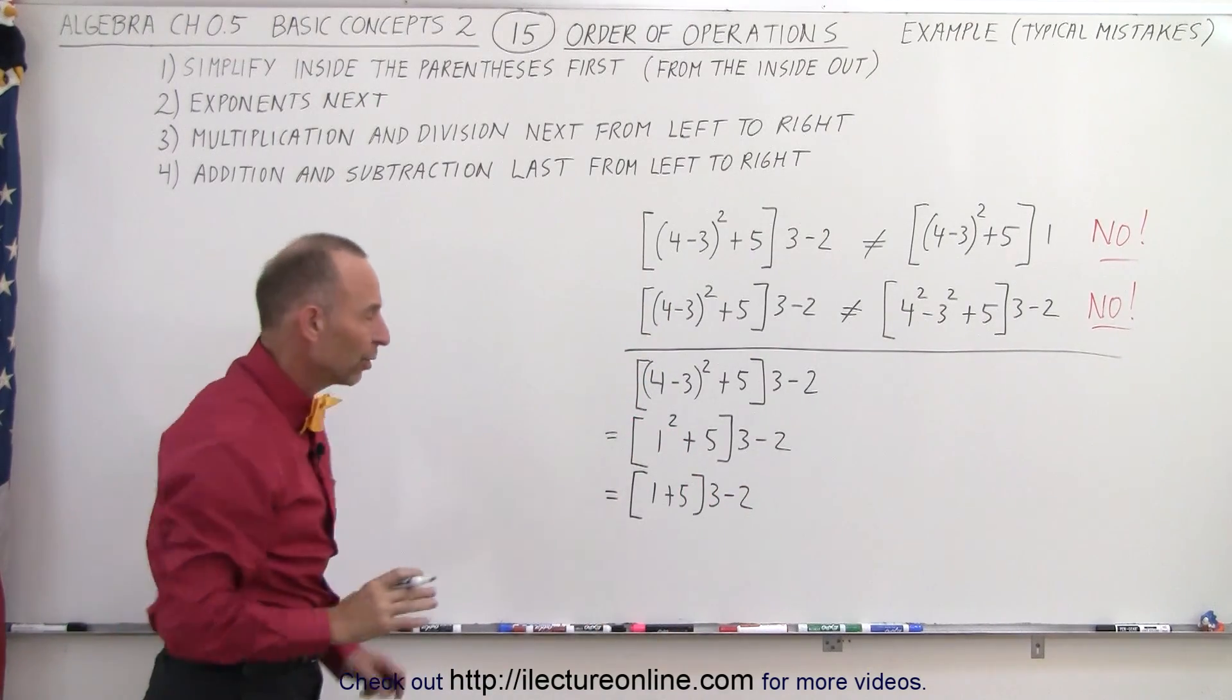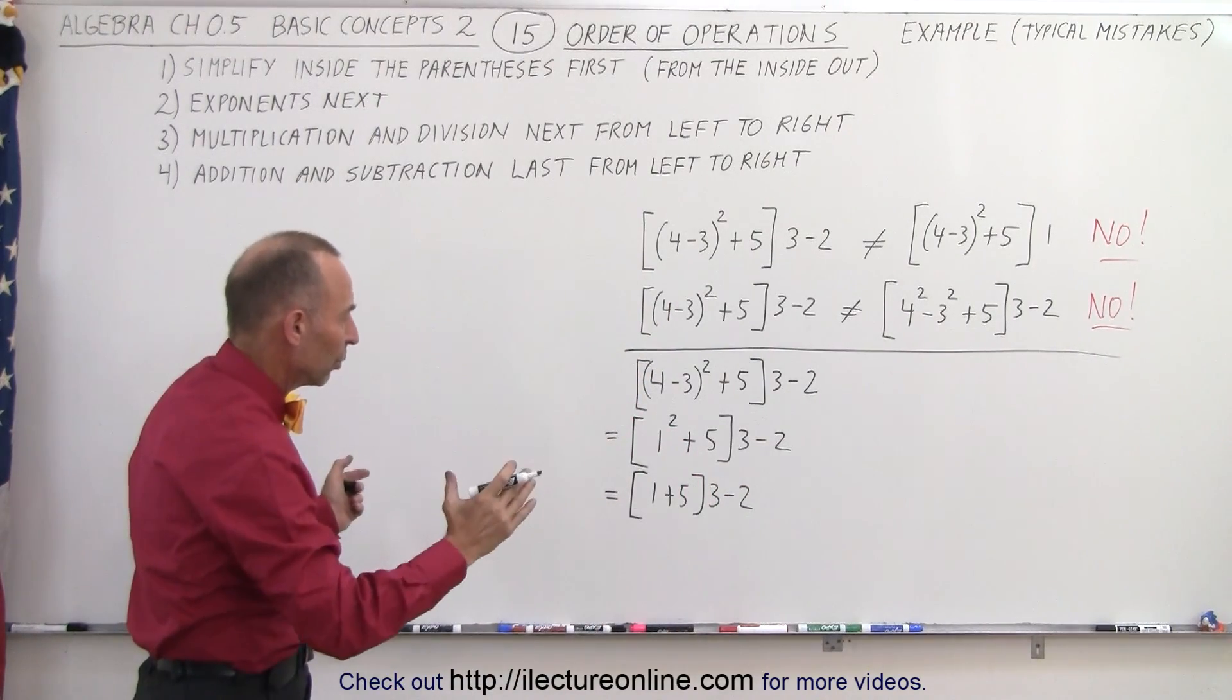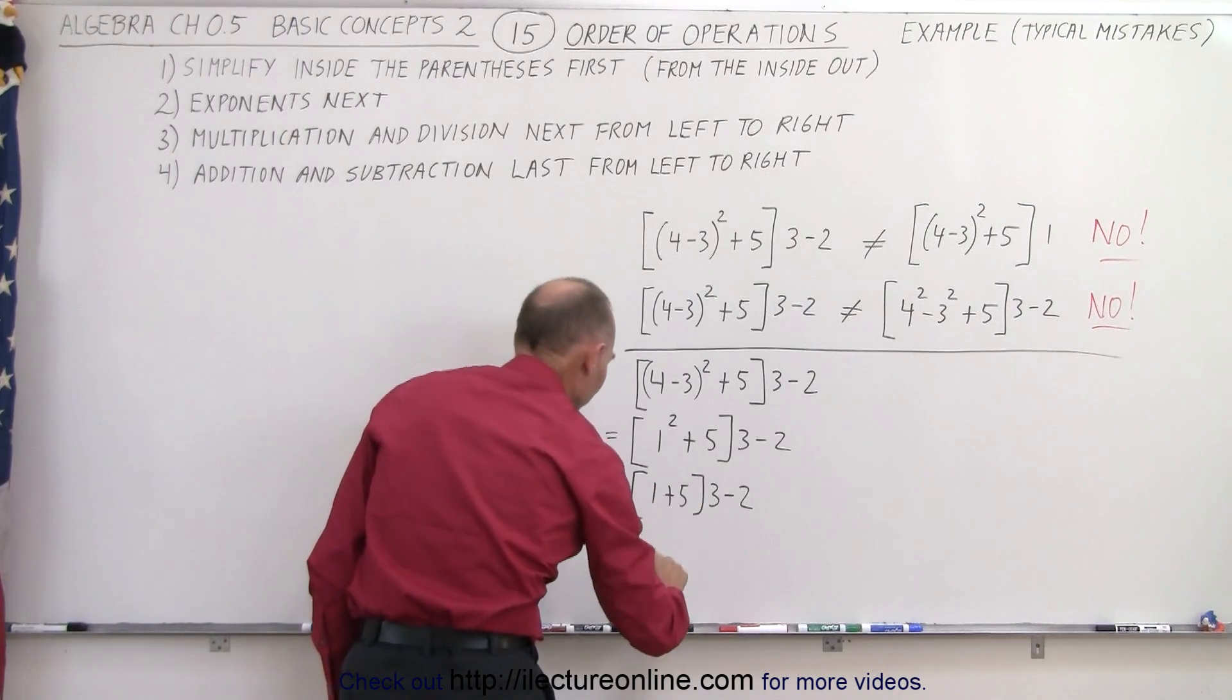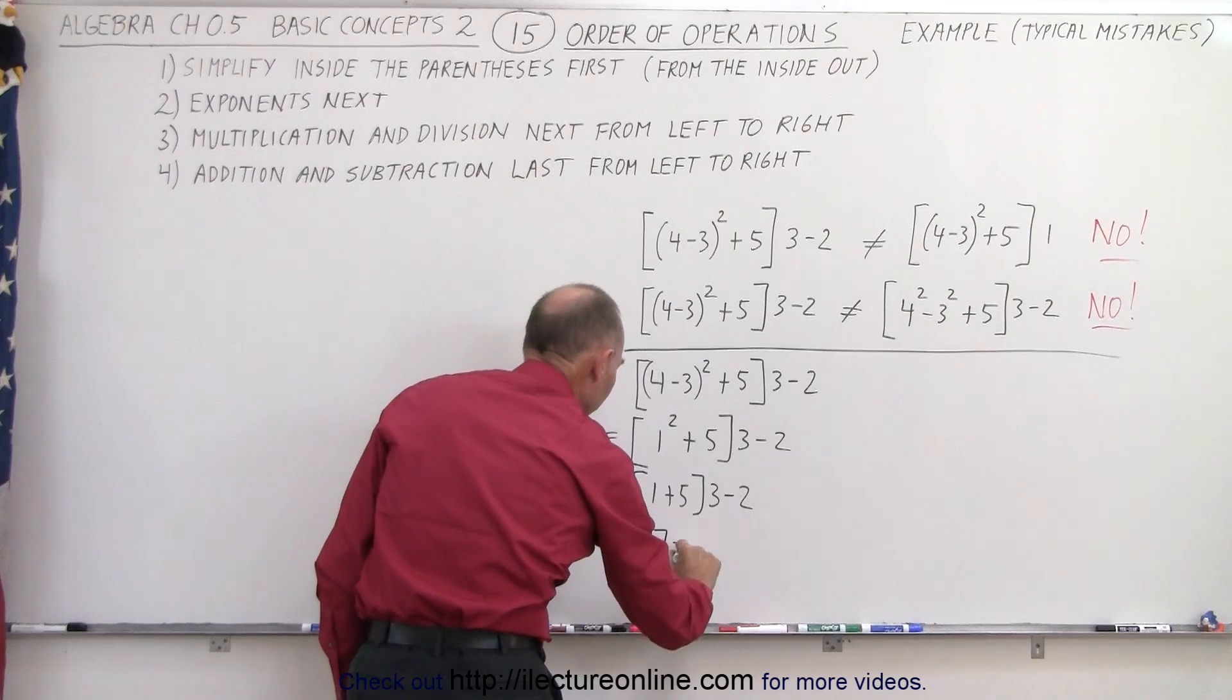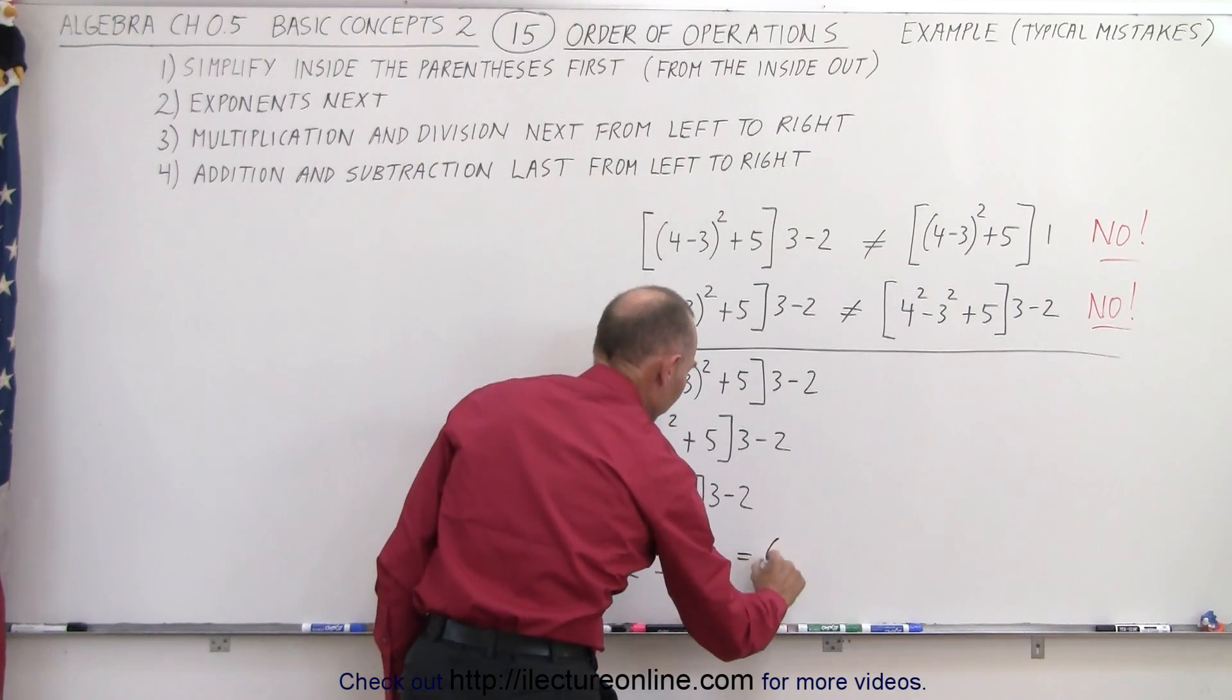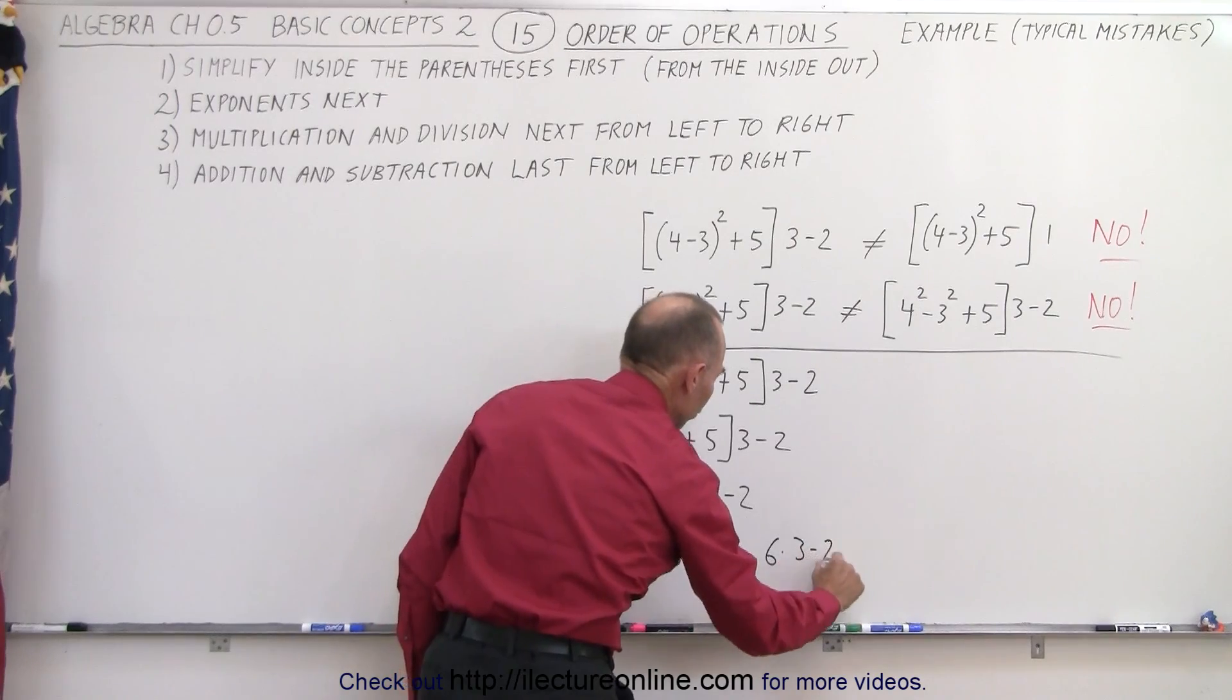We're still not done simplifying inside the brackets. We'll do that next. So this equals (1+5) which is 6, multiplied times 3 minus 2, which can now be written as 6 times 3 minus 2.